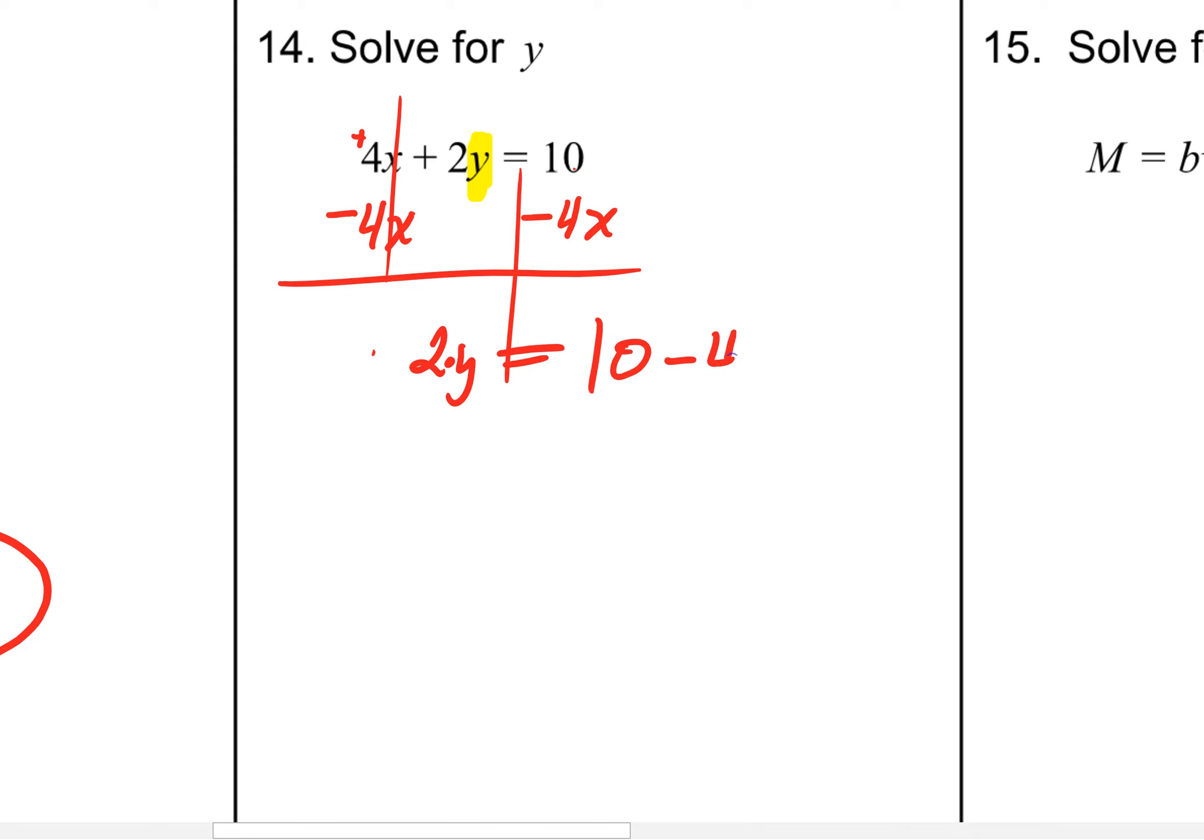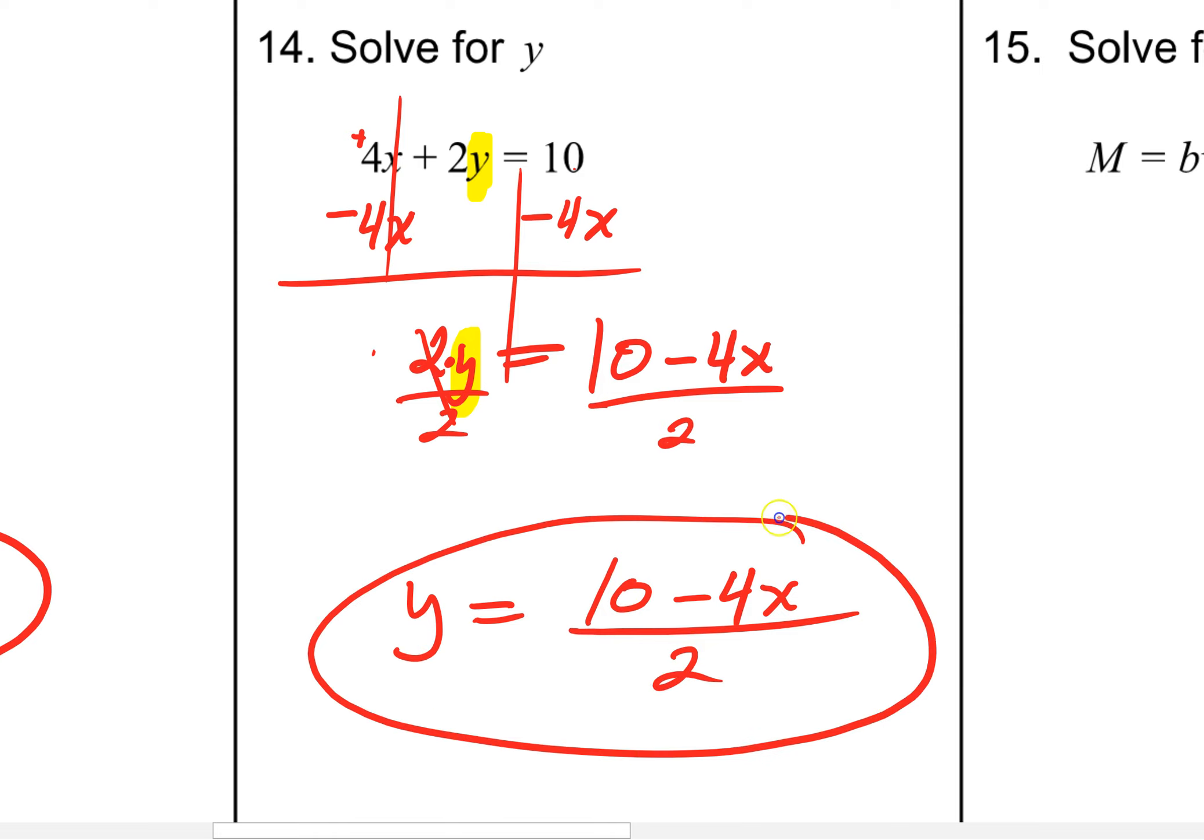You'll just have a 2 times y remaining. Now, the 10 and the minus 4x, they are not like terms. You cannot turn that into a 6 or a 6x. You just leave it as 10 minus 4x. But of course, we need to get y alone. And 2 is being multiplied to y. So, we have to do the opposite of multiplying by 2, which is dividing by 2. It's going to have an answer of 10 minus 4x all over 2. Even if you leave this answer here, technically we could reduce, we could simplify, but this is good enough for a general solution.